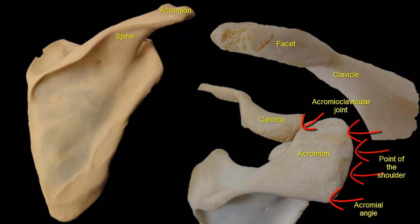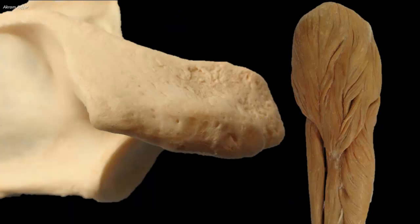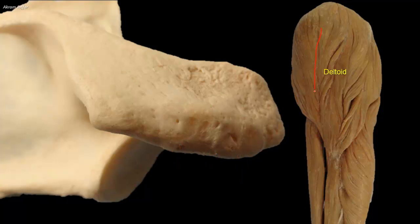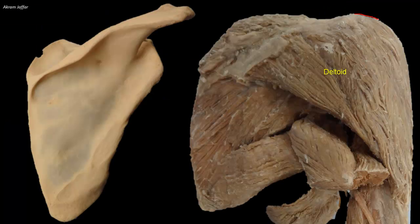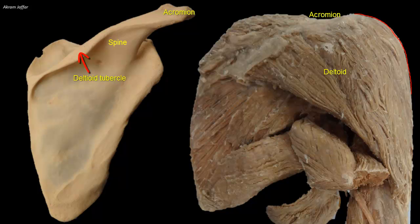The lateral and posterior borders of the acromion meet to form the acromial angle. The lateral border of the acromion shows vertical ridges for the attachment of the multipinnate central mass of deltoid. Here you can see the multipinnate central mass of deltoid. The acromion can be easily felt, and in some people it might be visible, especially when the deltoid contracts against resistance. The deltoid tubercle of the scapular spine is the prominence indicating the medial point of attachment of the deltoid.